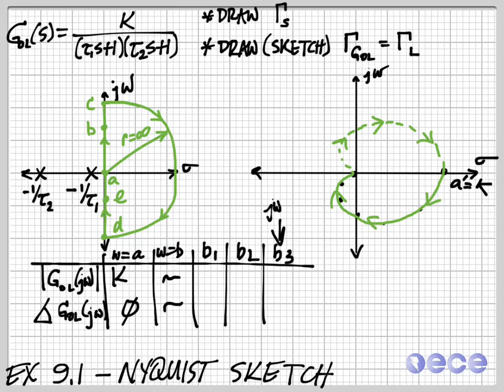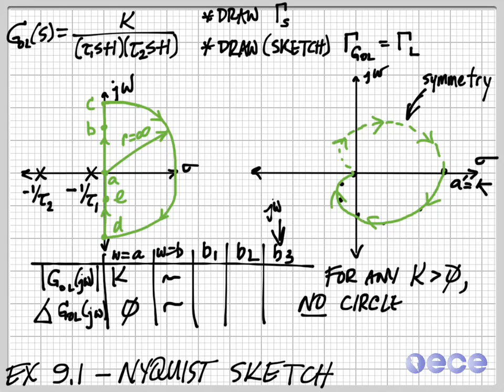So now that we've done this, and we've indicated the direction, again, we've done this through symmetry. So now we know that for any value k greater than zero, again, we sort of sketched this out, and I told you what some of the values are. But for any k greater than zero, our contour gamma GOL does not circle s equals minus one.